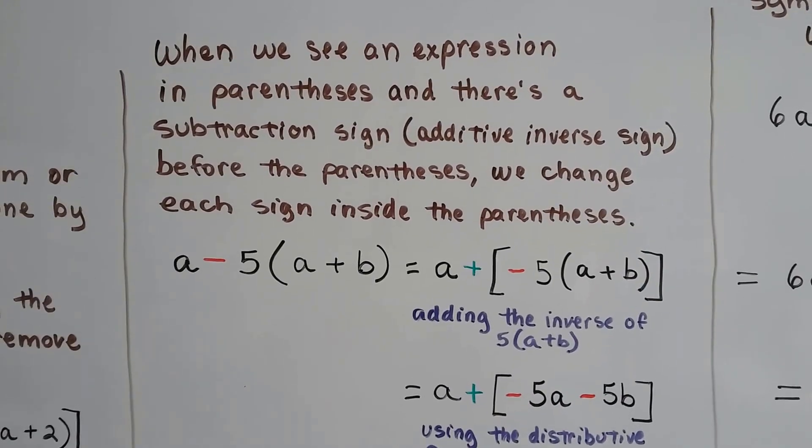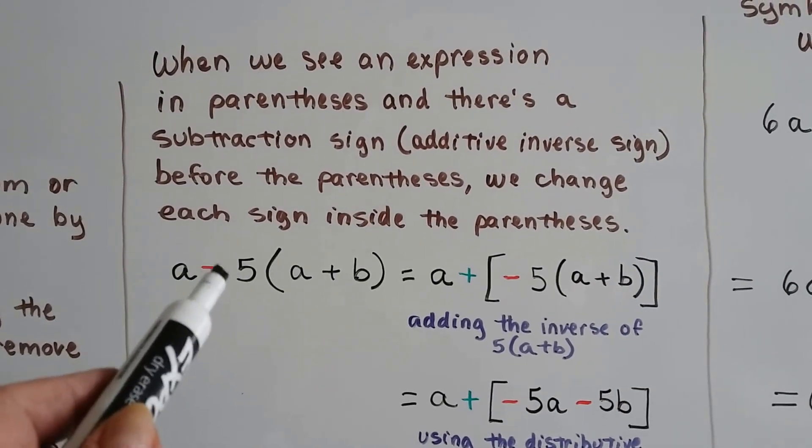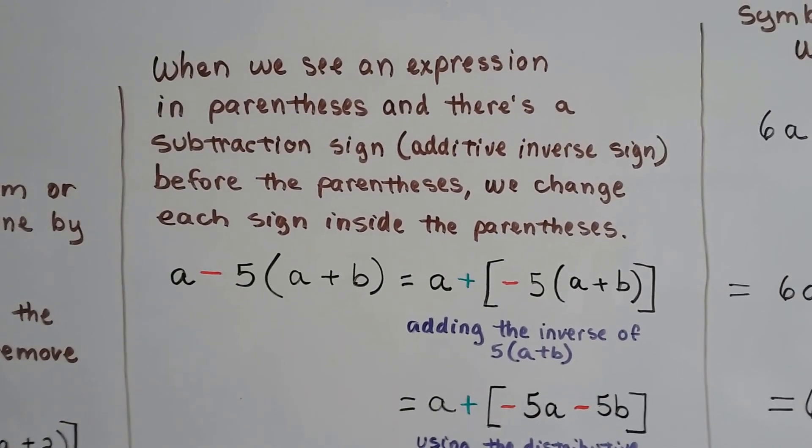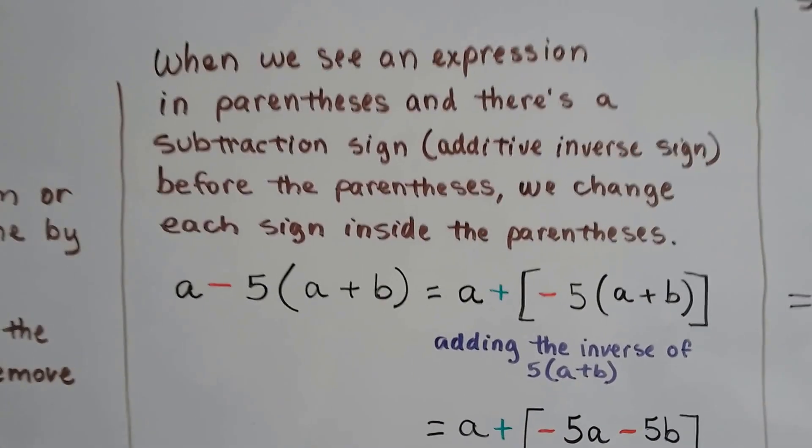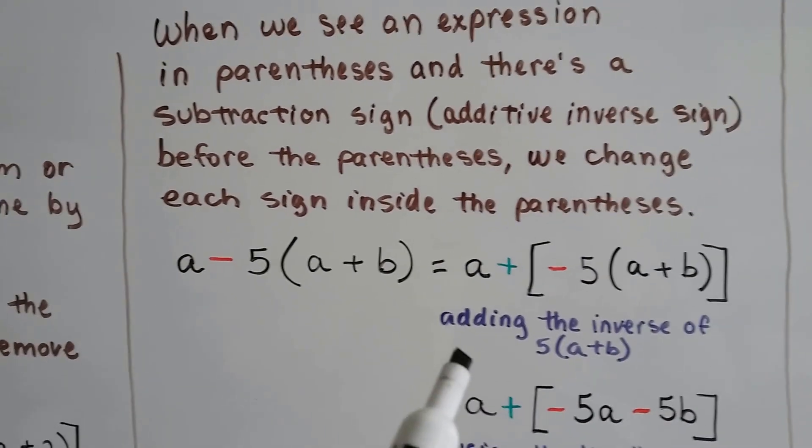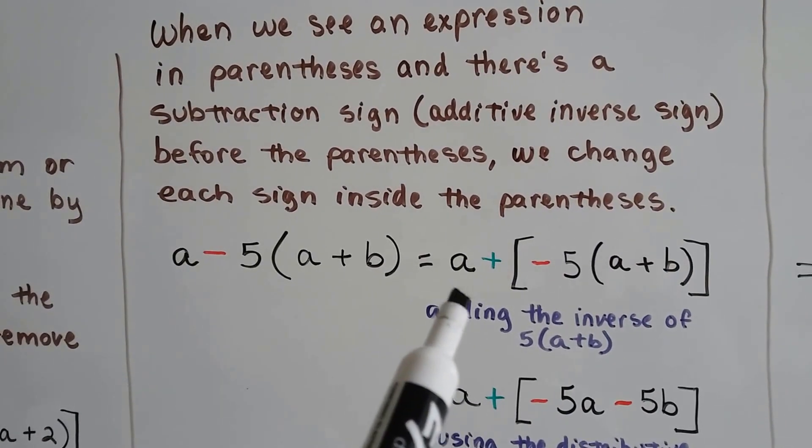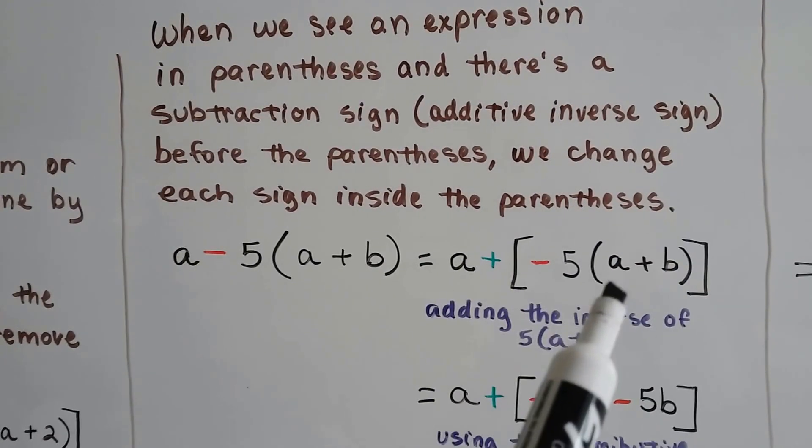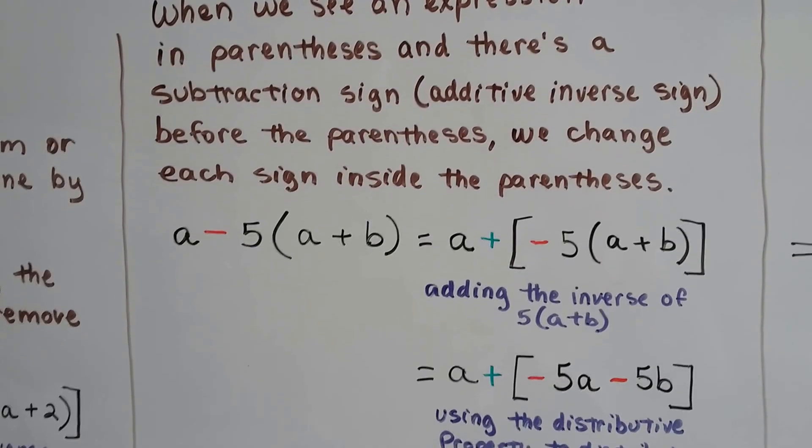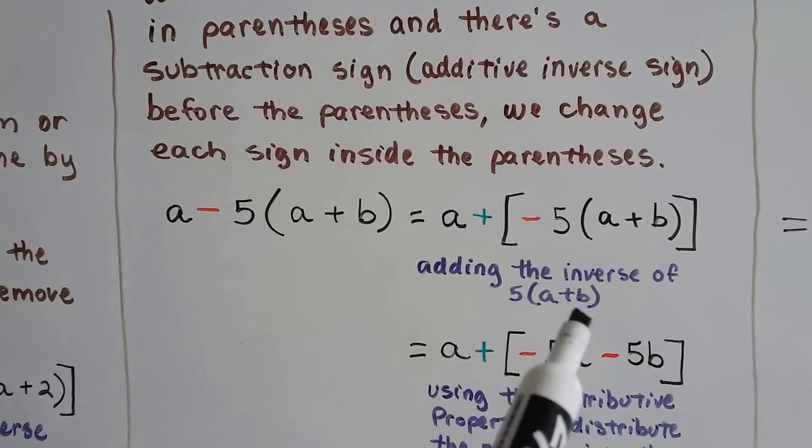So we have a minus 5. That's still a subtraction sign before the parentheses. That counts. So that gives us, by adding the inverse, a plus a negative 5 times (a plus b). It's just the inverse of 5 times (a plus b).